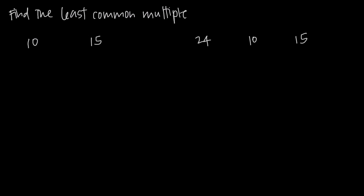In this video, we're talking about how to find the least common multiple of a set of numbers. The least common multiple is just the number that both of the numbers we've been given will divide into evenly.